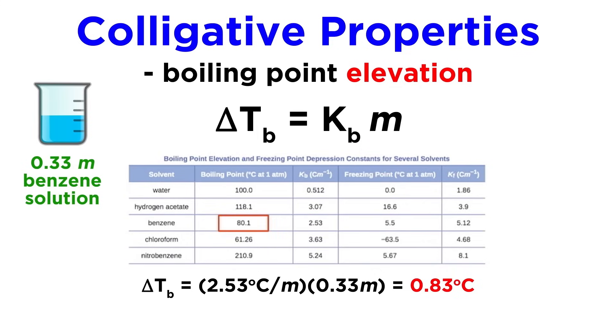Now we must add this delta T value to the normal boiling point, as the presence of solute will always cause the boiling point to increase. Let's get the normal boiling point of benzene, which is 80.1, and add the elevation value we calculated. That gives us 80.9 degrees as the boiling point for the solution.